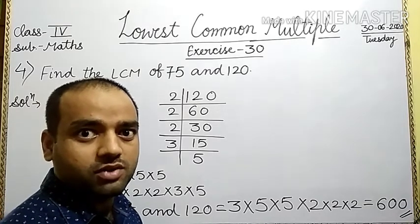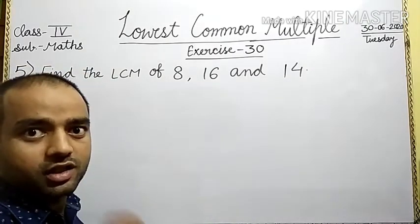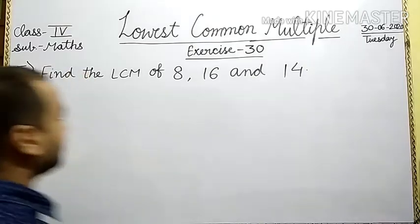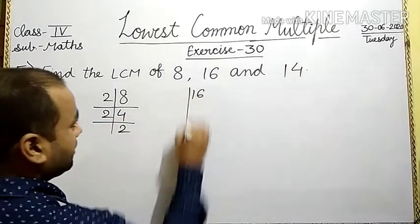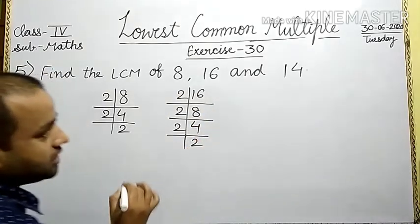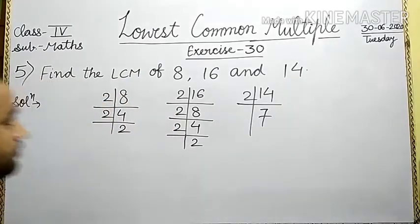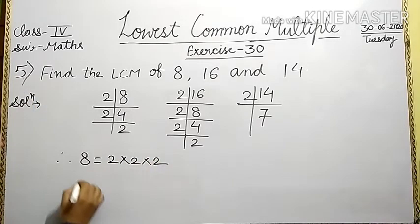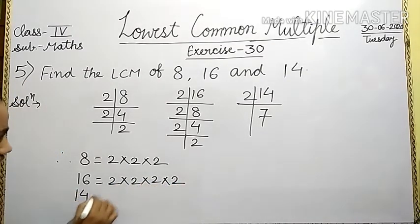Now, let us discuss question number 5. In question number 5, find the LCM of 8, 16 and 14. So first of all, we find the prime factors of 8, 16 and 14 by division method. For 8: 2 divides to give 4, then 2 gives 2. For 16: 2 gives 8, 2 gives 4, 2 gives 2. Is it clear? Next, 14: 2 gives 7 — this is a prime number. Therefore, 8 is equal to 2 into 2 into 2; 16 is equal to 2 into 2 into 2 into 2; and 14 is equal to 2 into 7.